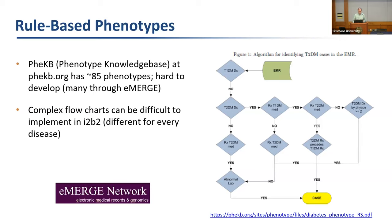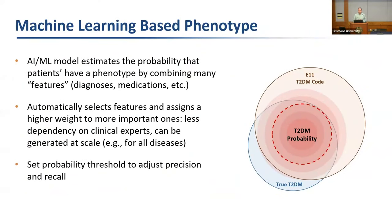eMERGE is one of the large contributors to these efforts. Moving on to machine learning-based phenotypes: AI/ML models estimate a probability that a patient has a particular phenotype by integrating many different features from the chart — diagnoses, medications, laboratory tests — in an automated way. The model places higher weight on things that are better evidence for the phenotype, and this can be generated at scale.